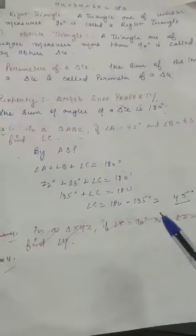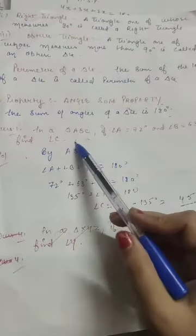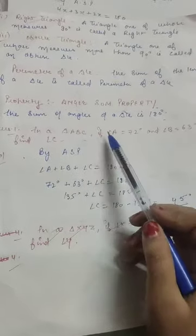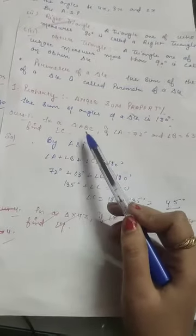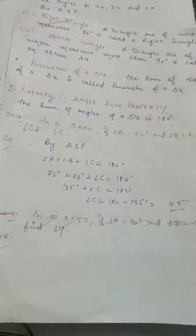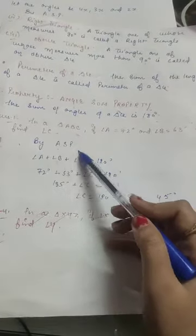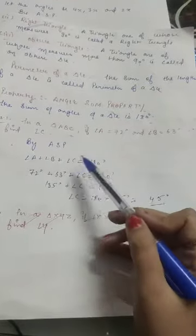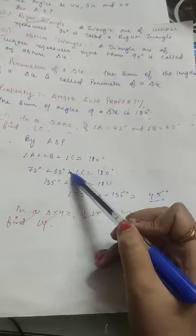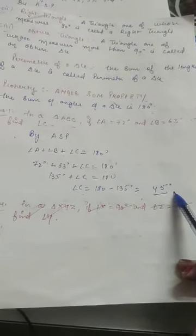Based on this, we will have a question today. First question: In a triangle ABC, angle A is 72 degrees and angle B is 63 degrees. You have to find the value of angle C. We can easily find it using the angle sum property (ASP). Since A and B are given, we add them and subtract from 180 degrees, so angle C is 45 degrees.